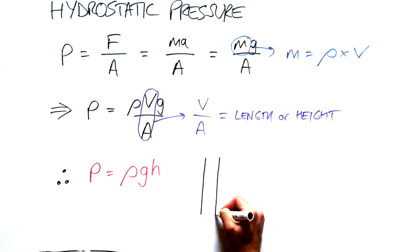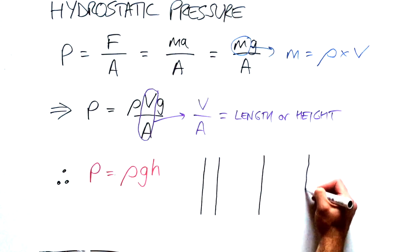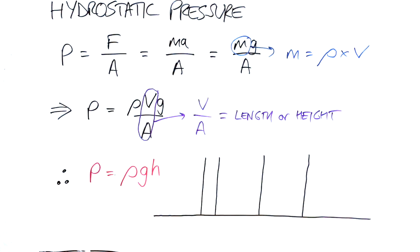So if we take two columns of liquid, let's use water as an example. These two columns have different volumes, different surface areas, and different masses. So what are the pressures P1 and P2 that are produced at the bottom of these two containers of the same liquid of different sizes?